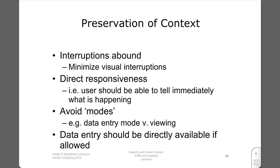Preserving context is important in healthcare where interruptions are frequent. Context is also important in preventing errors, since the significance of information depends on context. Systems should provide direct responsiveness as much as possible so that users can tell what is happening at any point — visibility of system status — and whether their task is progressing normally. Some older systems have the user set modes, such as different modes for data entry versus viewing. This is to be avoided, as it can lead to errors and user frustration when the user may be unable to keep track of which mode is active.